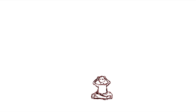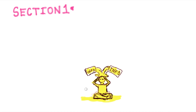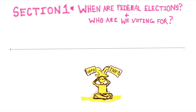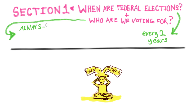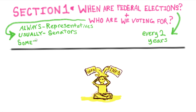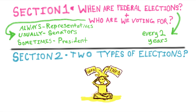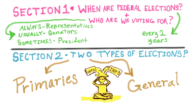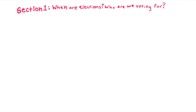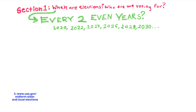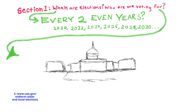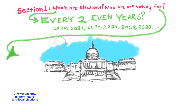To help orient things and make it easier to remember, here's an outline of the video. Section 1 will be on when federal elections happen and who you are voting for. As a preview: every two years, always the House of Reps, usually the Senate, and sometimes the President. Section 2 will be on the two types of elections, which are primary and general. Federal elections happen every two years, on even years.